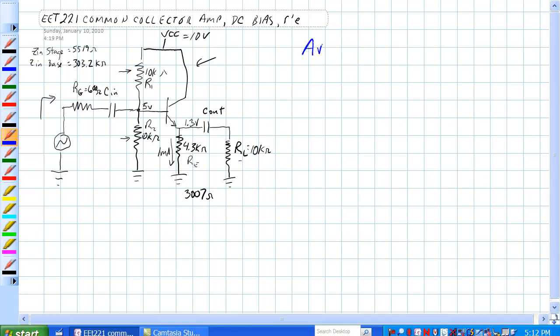The next thing to look at is voltage gain in this circuit. If we look at the voltage gain, voltage gain is equal to Vout over Vin.